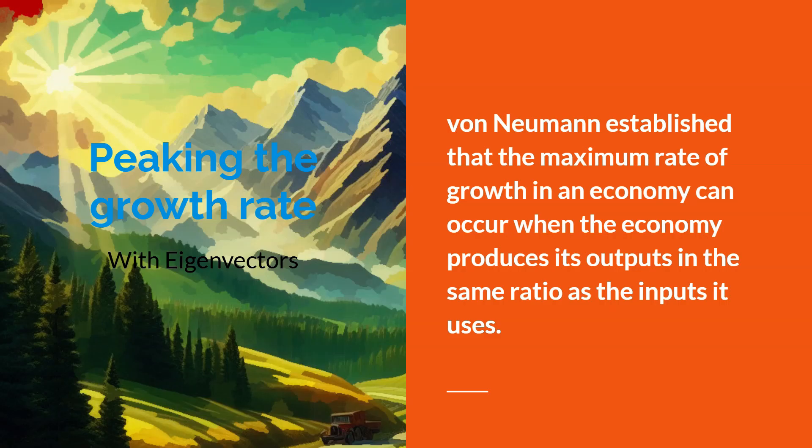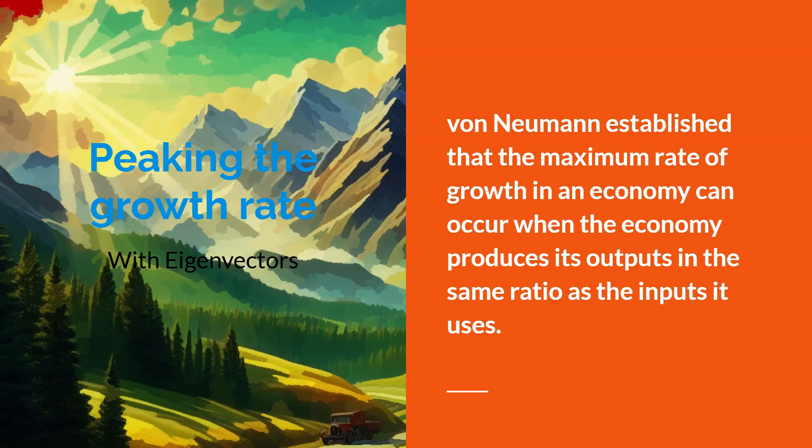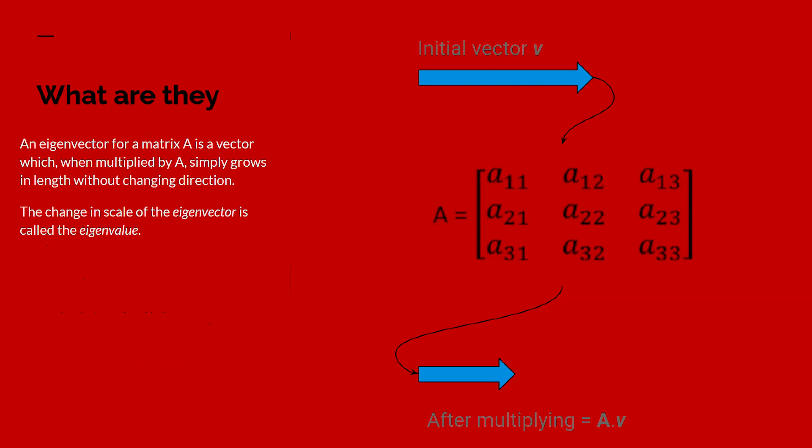So he established that the maximum rate of growth in an economy, von Neumann established, will occur when it produces its outputs in the same ratio as it uses inputs. What von Neumann was doing here is using a concept that he'd already become very familiar with in quantum mechanics, which is eigenvectors. But it seems a bit odd that something from quantum mechanics turned out to be relevant for Soviet planning.